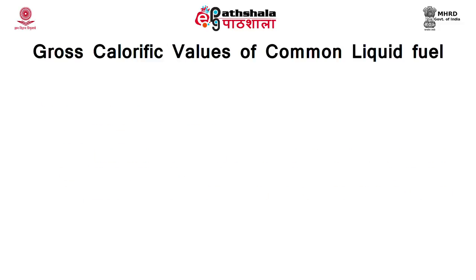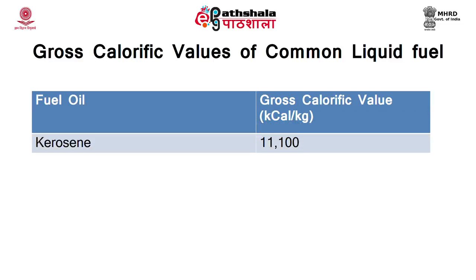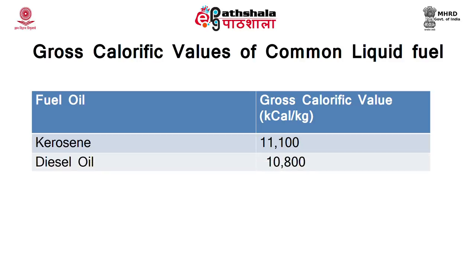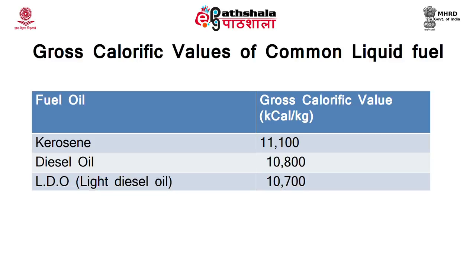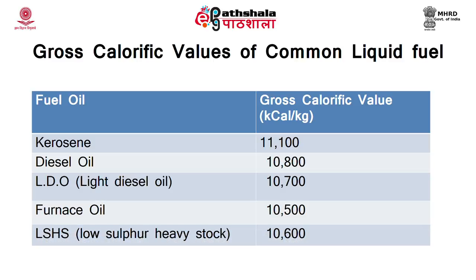This table shows the gross calorific value of common liquid fuels. Kerosene: 11,100 kcal/kg; diesel oil: 10,800 kcal/kg; light diesel oil: 10,700 kcal/kg; furnace oil: 10,500; low sulfur heavy stock oil: 10,600. These are the gross calorific values.